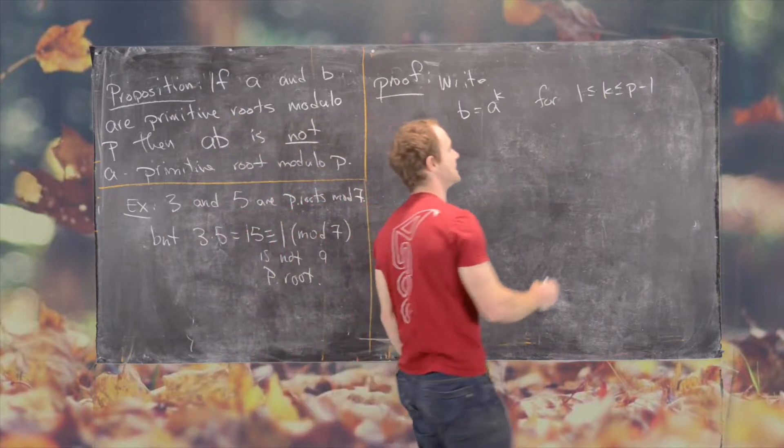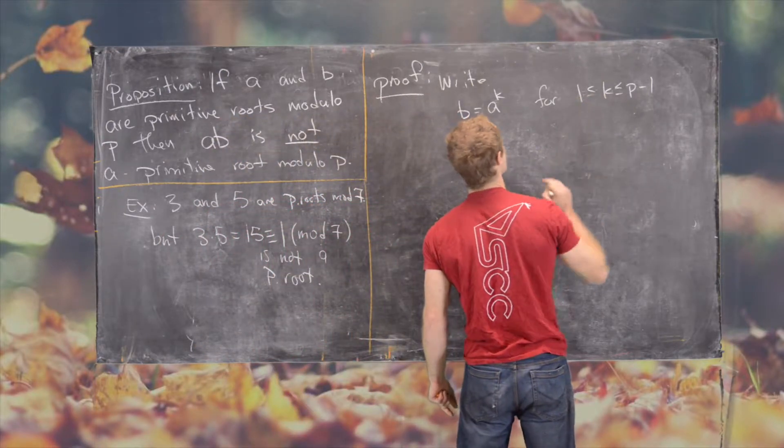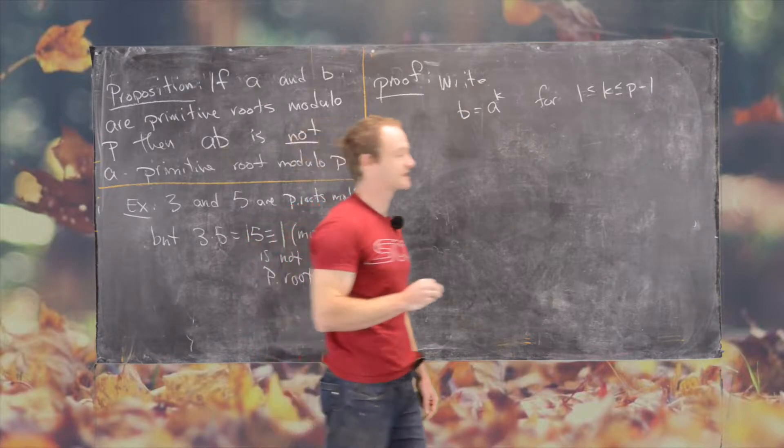And I should say that here we can assume that K is not equal to 1, because that means that A and B would be the same.